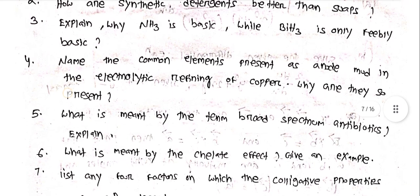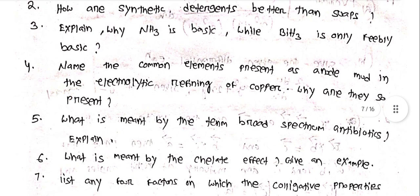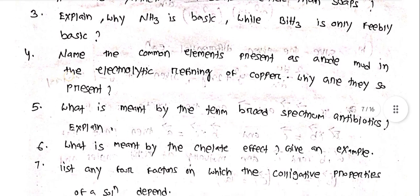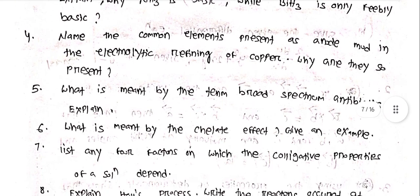Explain why NF3 is basic while BF3 is only weakly basic. Name the common elements present as anode mud in the electrolytic refining of copper.